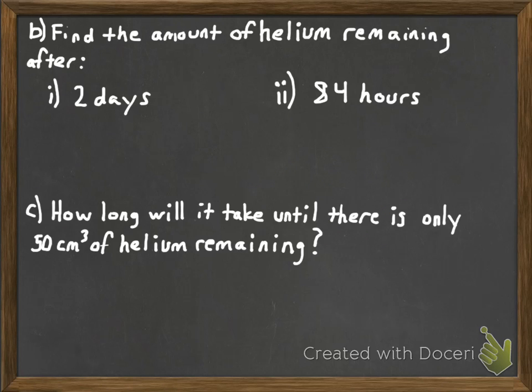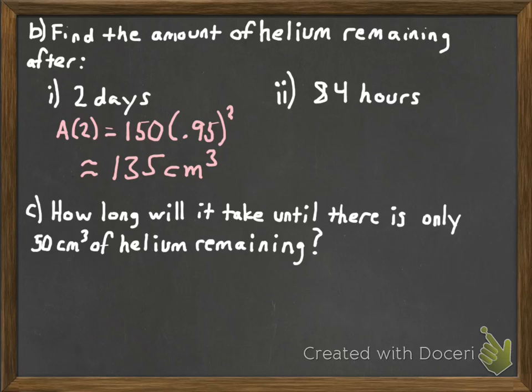Let's use that equation for a couple things. It wants us to find the amount of helium remaining after 2 days and then after 84 hours. Take that function that we just made and let's figure out what it gives us after you plug in 2. After 2 days you're down to about 135 cubic centimeters of helium.